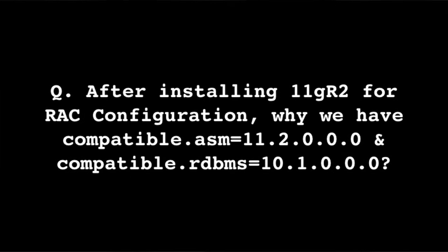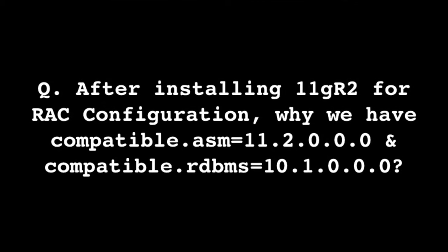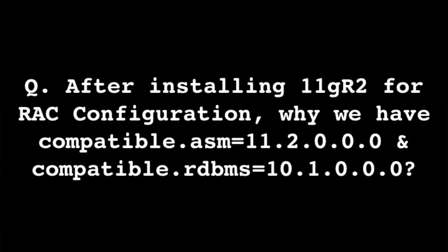The next question: after installing 11g R2 for RAC configuration, why do we have compatible.asm = 11.2.0 and compatible.rdbms = 10.1.0? These two parameters are very important when accessing an ASM disk group. An ASM disk group is accessed by two pieces of software: the ASM software itself, and the Oracle database software.